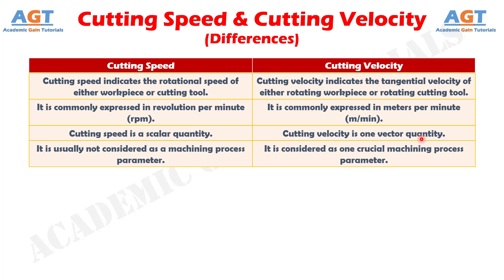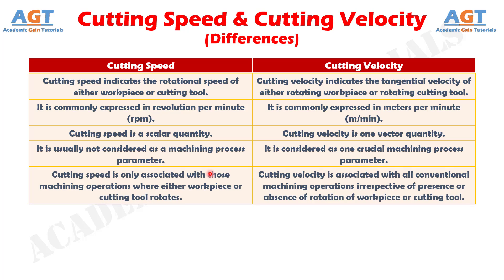Number 4: cutting speed is usually not considered as a machining process parameter, whereas cutting velocity is considered as one crucial machining process parameter.